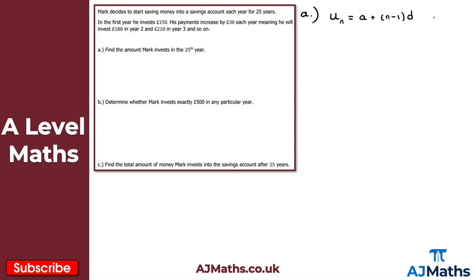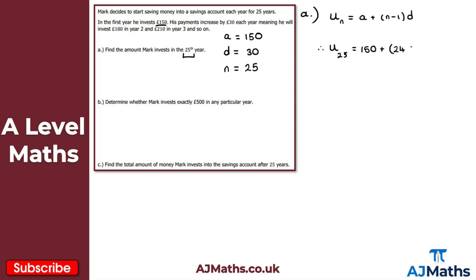We need a, n, and d. A, the first term, is 150. D, the common difference — how much it increases each year — is 30. And n is 25, since we're looking for the 25th term. Substituting: U25 equals 150 plus (25 minus 1) times 30, which is 150 plus 24 times 30. Putting this into your calculator gives £870 — that's the amount invested in the 25th year.